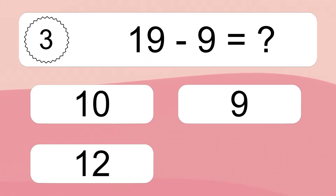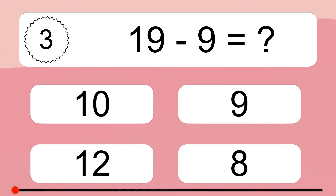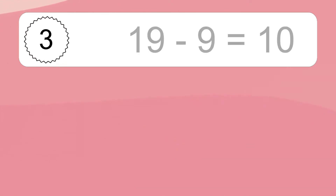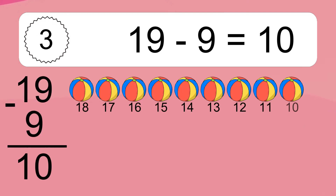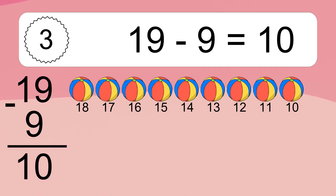19 minus 9 equals what? 19 minus 9 equals 10. Let's count it: 18, 17, 16, 15, 14, 13, 12, 11, 10.